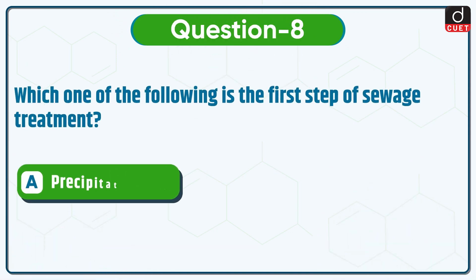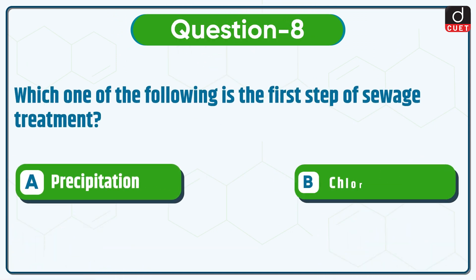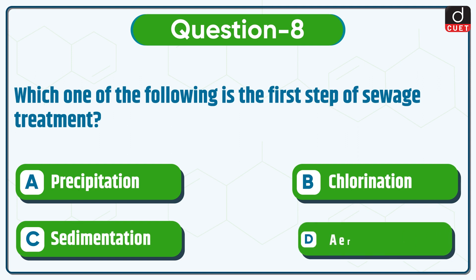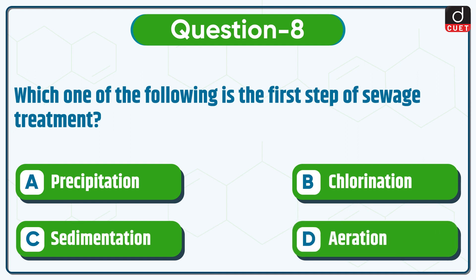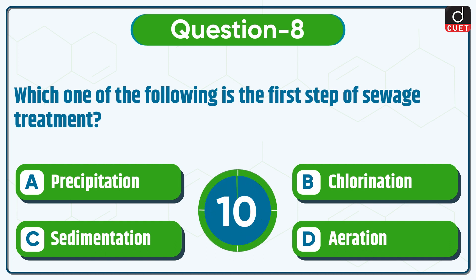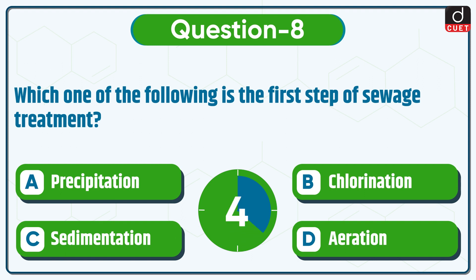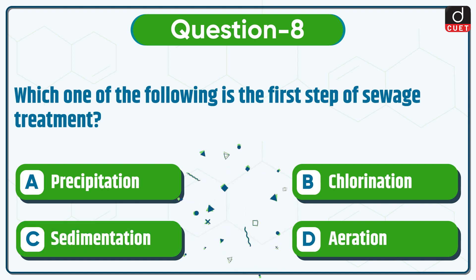Next question: which one of the following is the first step of sewage treatment? Precipitation, Chlorination, Sedimentation, or Aeration? The correct answer is option C, Sedimentation.